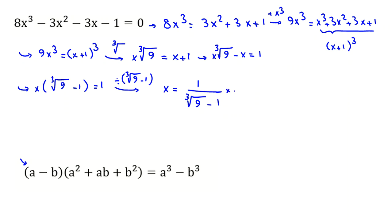To rationalize, let A = ∛9 and B = 1. We multiply by A², which will be ∛81, plus AB, which will be ∛9.